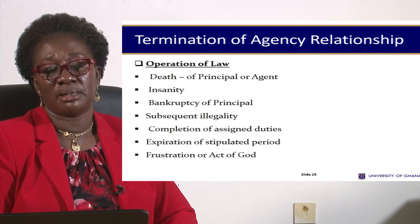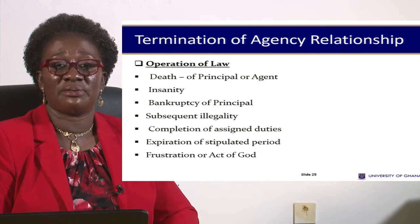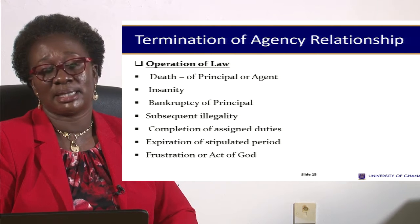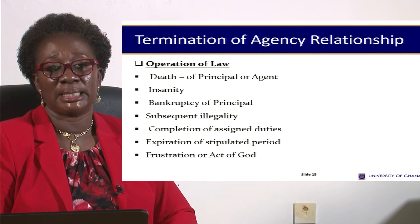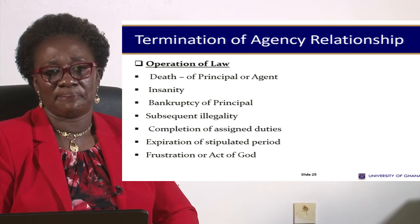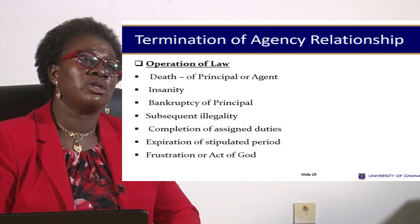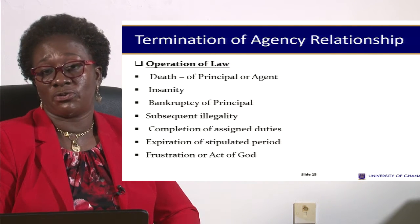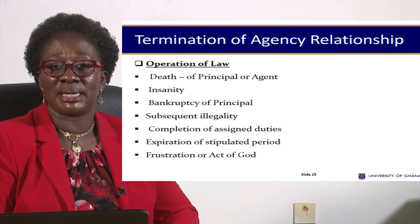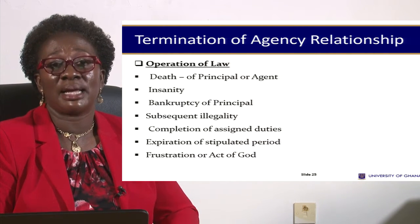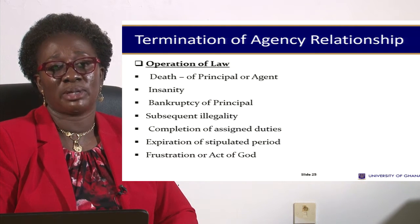Bankruptcy of the principal also terminates the relationship — when the principal becomes bankrupt, declares it, and it is accepted, that brings the relationship to an end. Any illegality also terminates it: a contract that is lawful today may become illegal tomorrow by reason of a new law passed. When that happens, the relationship automatically comes to an end.